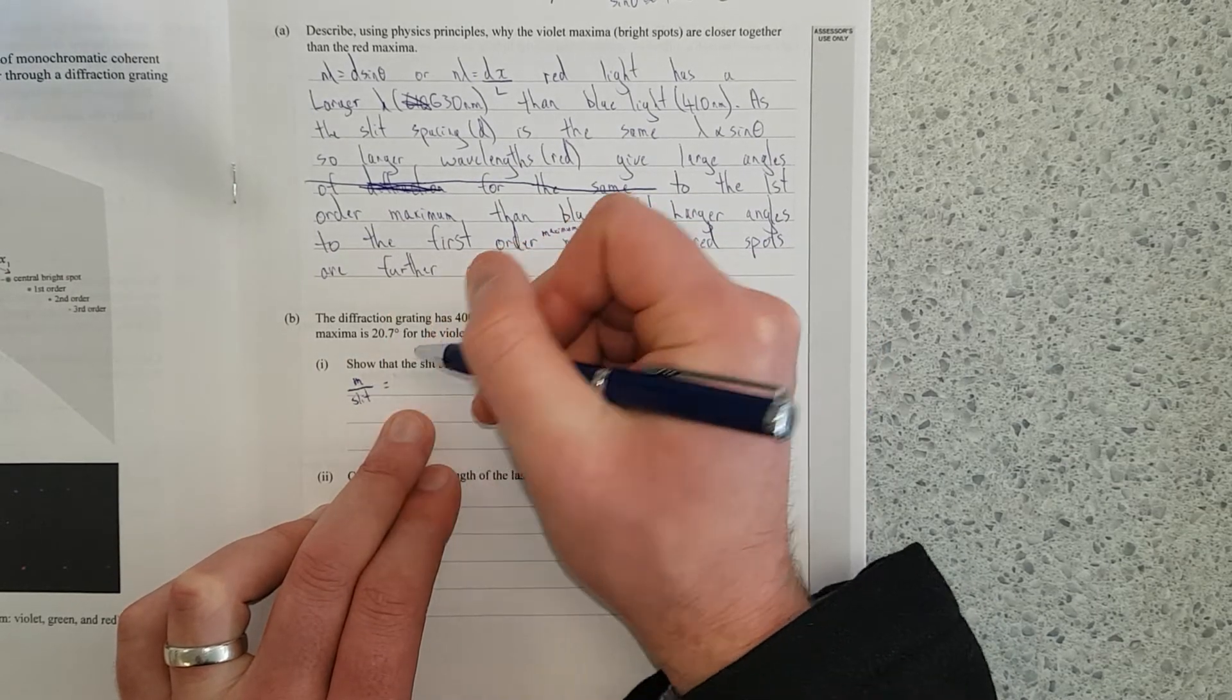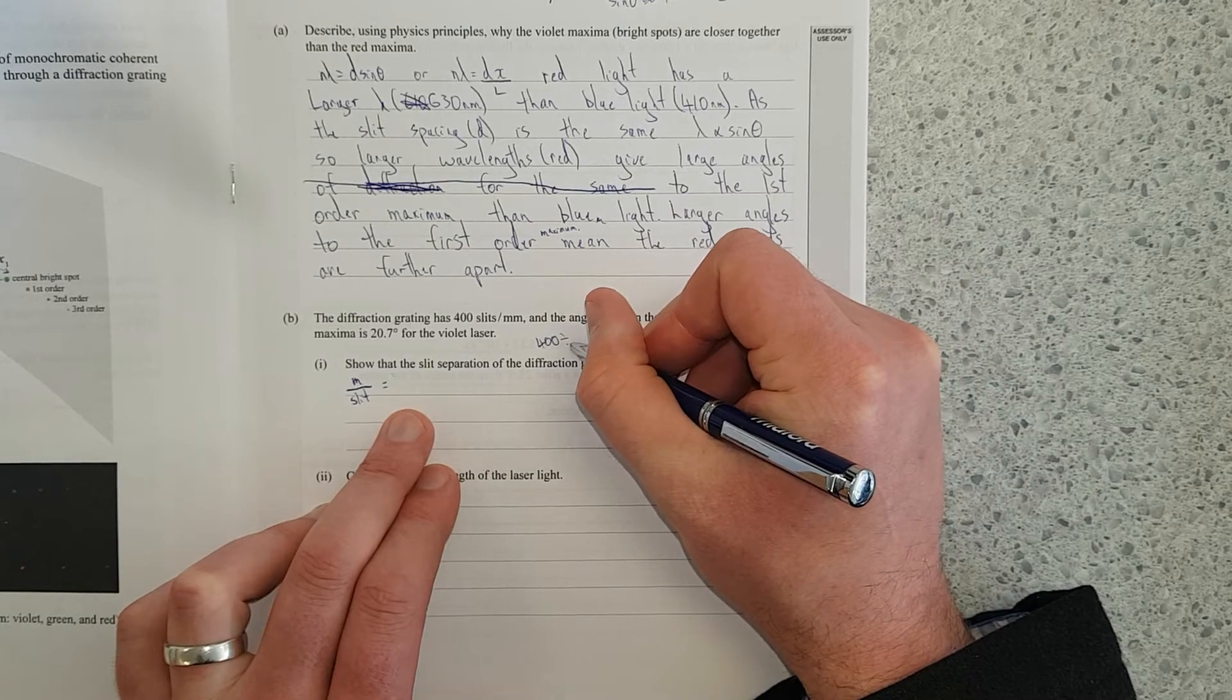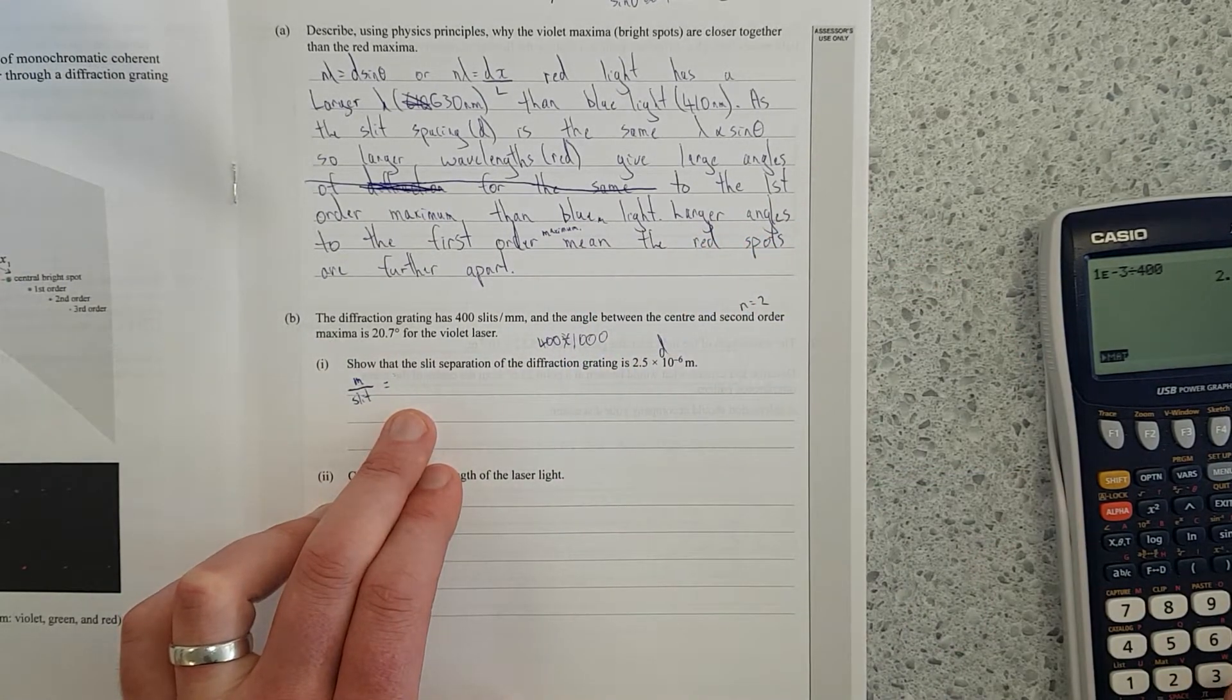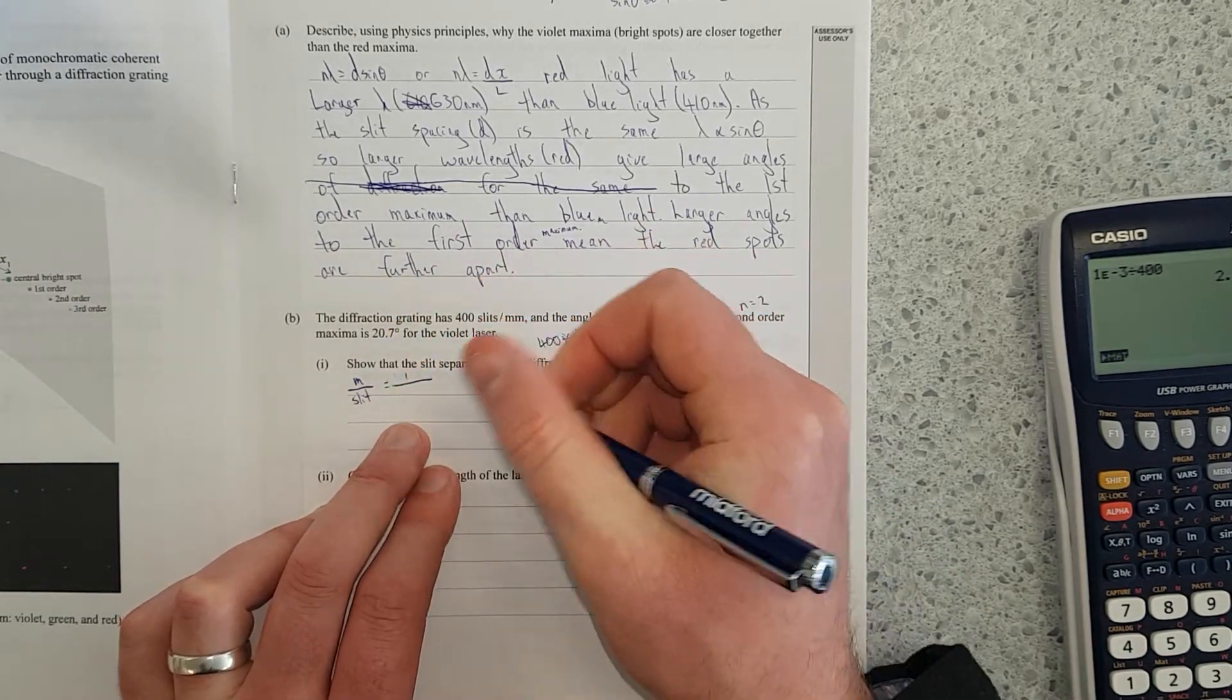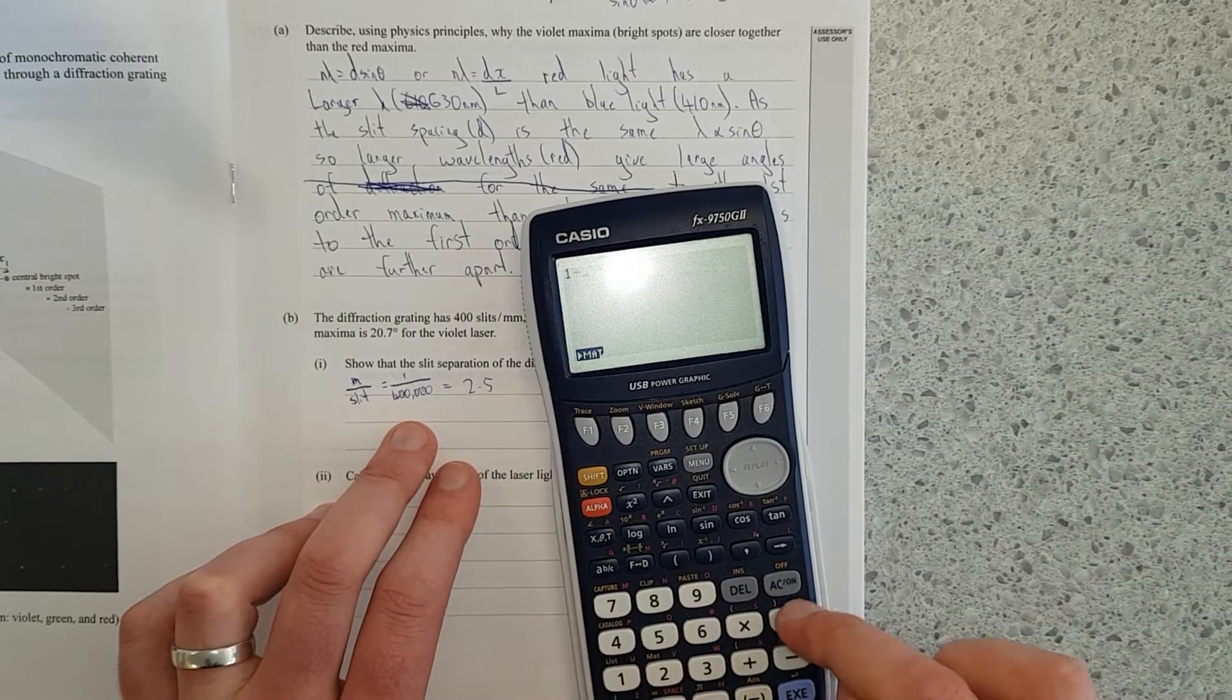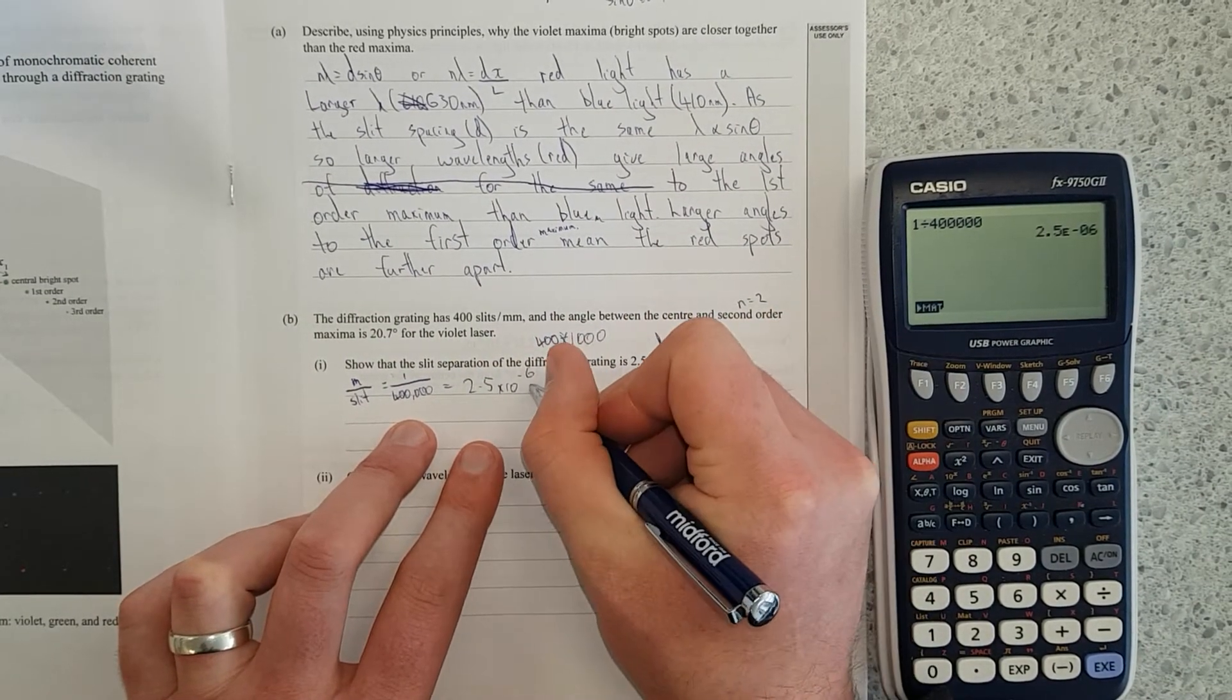I'll just turn this into actual millimeters. So 400 divided by a thousand, and that'll give me how many slits per meter. Times by a thousand, that'll be how many slits per meter. And that's going to give me 400,000. So one meter divided by 400,000 does actually equal 2.5 times 10 to the negative 6 meters.